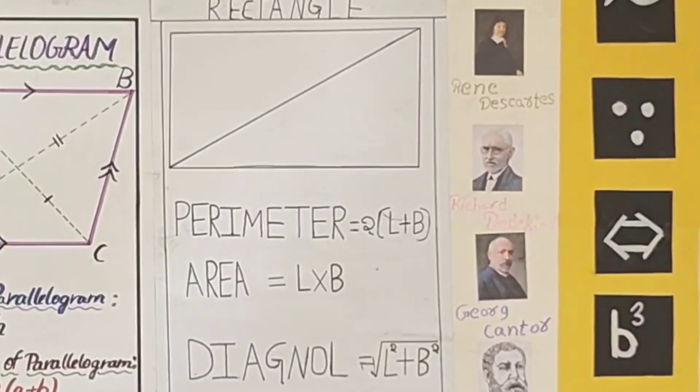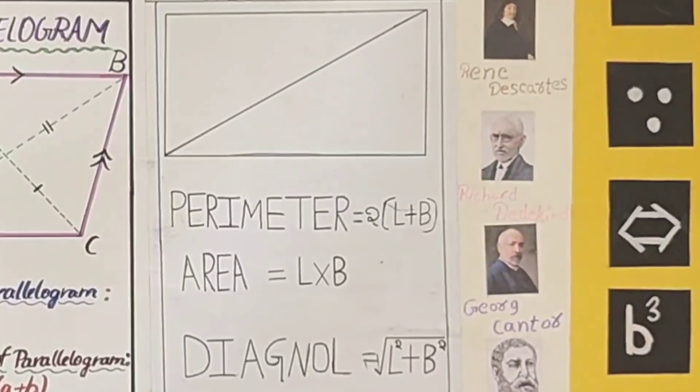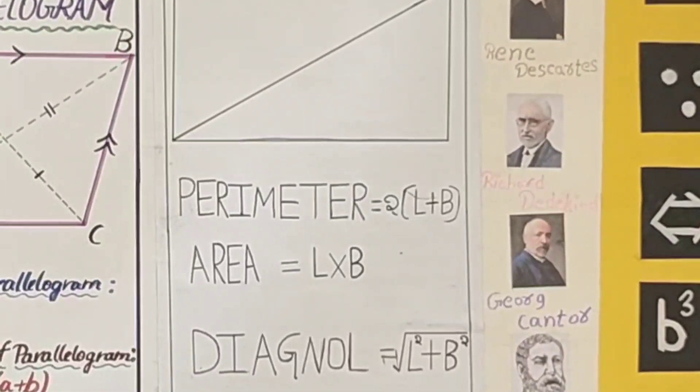This is the rectangle. In the rectangle, opposite sides are equal. Perimeter of rectangle is equal to 2 into L plus B. Area of rectangle is equal to L into B. Diagonal of rectangle is equal to root L square plus B square.